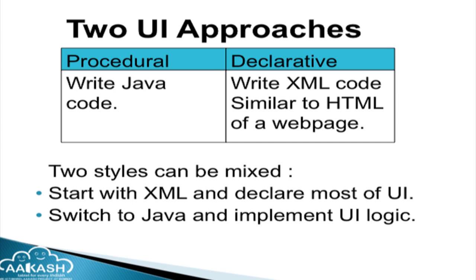There are two approaches to implement user interface. The first is procedural and the second is declarative. In the procedural approach we write Java code, and in the declarative approach we write XML code, which is similar to the HTML of a web page. The best practice is to start with the XML file and declare most of the user interface, then switch to the Java code to implement the user interface logic. We will be implementing this best approach in our applications.